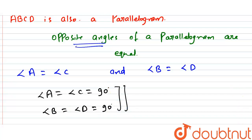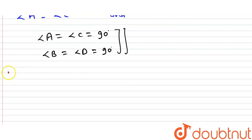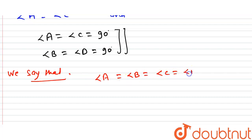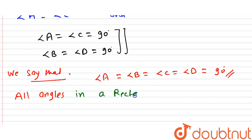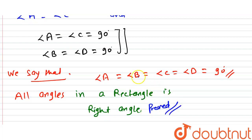So we can say that angle A equals angle B equals angle C equals angle D equals 90 degrees. Therefore, all angles in a rectangle are right angles, and we have proved that all angles in a rectangle are 90 degrees. Thank you.